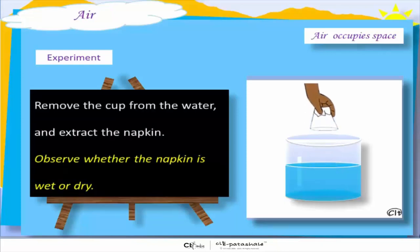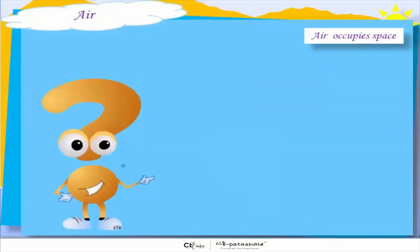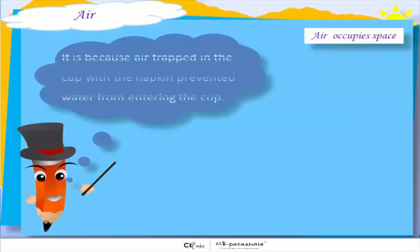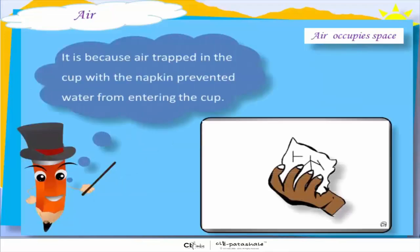Now remove the cup from the water and extract the paper napkin. Let us observe whether the napkin is wet or dry. Wow! The napkin is dry. Why did it stay dry? This happened because air trapped in the cup with the napkin prevented water from entering the cup.